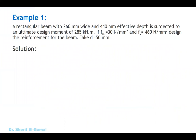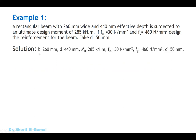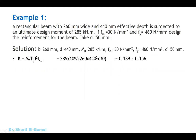Let's take an example. A rectangular beam is 260 mm wide with an effective depth of 440 mm, subjected to an ultimate design moment of 285 kN·m. Fcu and fy are given, and d' is also given. Step 1: Calculate K = Mu / (Fcu·b·d²). Substituting the values, we find K > 0.156, which means this section requires compression steel.